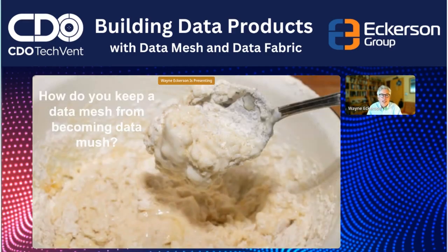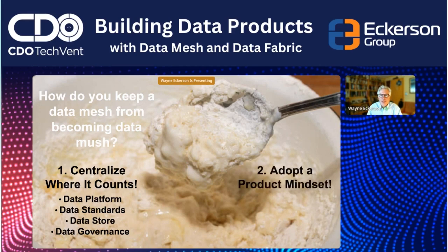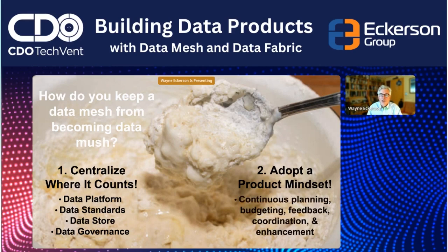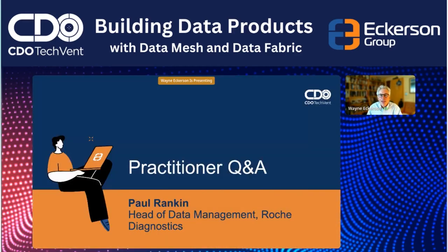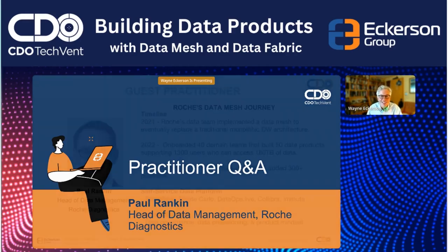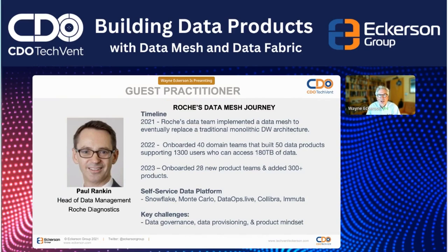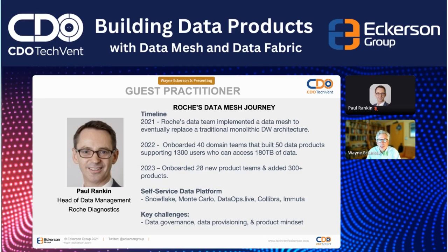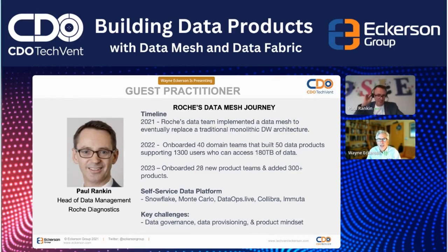How do you keep a data mesh from becoming data mush? You've got to centralize where it counts. Your data asset creators need to adopt a product mindset — moving from a project to a program mentality — which is the most challenging part. Let's bring in Paul to give us real-world perspective. Paul and his team at Roche decided in 2021 to adopt data mesh to replace a monolithic data warehouse. In 2022 they onboarded 40 domain teams that built 50 data products supporting 1,300 users accessing 100 terabytes of data. This year they've onboarded 28 new product teams and have over 300 products.